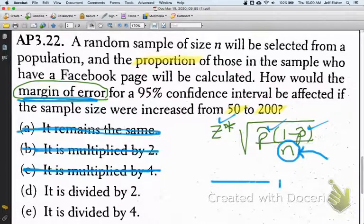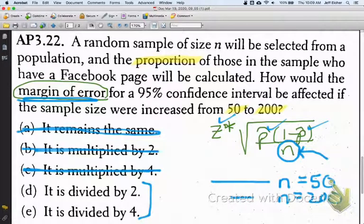So, if n is 50 here, the margin of error is going to be smaller if we increase the sample size to 200. So, it's either going to divide by 2 or 4.